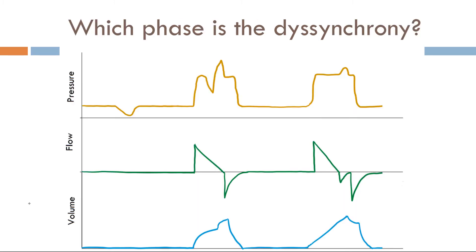Now which phase is a dyssynchrony occurring? Like I mentioned in prior videos, don't read waveforms up and down. Read them left to right. That way you don't miss anything and it's not too overwhelming. Now let's take a look.